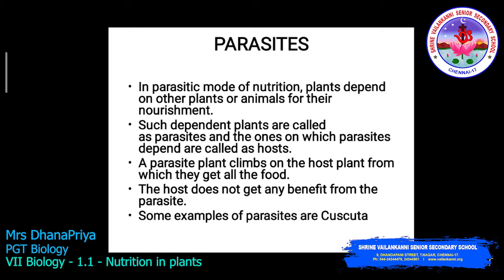In parasitic mode of nutrition, plants depend on other plants or animals for nourishment. Such dependent plants are called parasites, and the ones on which parasites depend are called hosts. The parasite depends upon the host plant for food production. A parasite plant climbs on the host plant from which it gets all the food, and the host does not get any benefit. An example of a parasitic plant is Cuscuta.